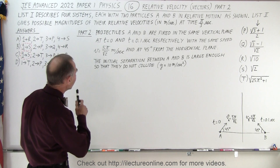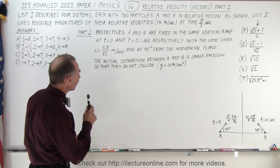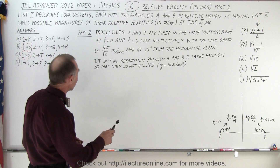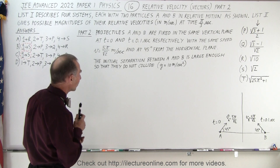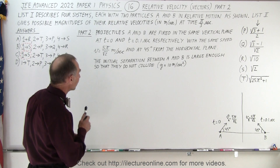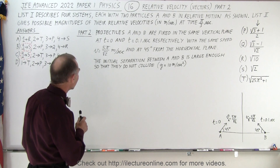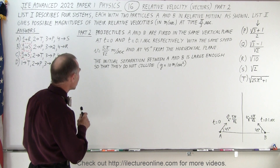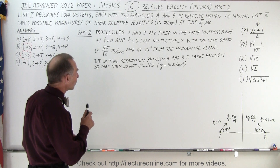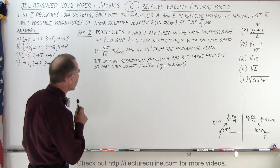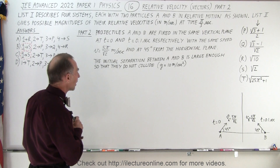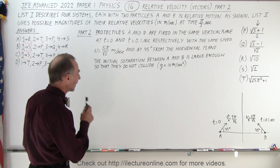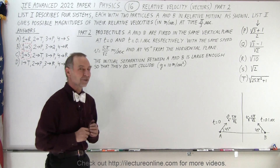Projectiles A and B are fired in the same vertical plane at t equals zero and t equals 0.1 seconds respectively, with the same speed v equals 5π over the square root of 2 meters per second, and at 45 degrees from the horizontal plane. The initial separation between A and B is large enough so that they do not collide, and take g to be 10 meters per second squared.